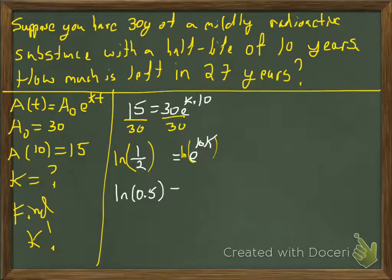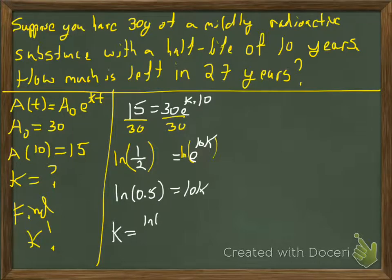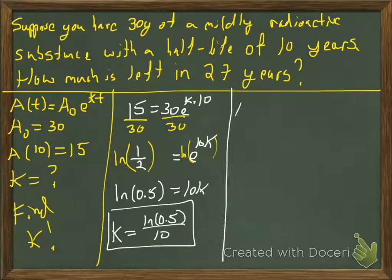Writing 0.5 in decimal form is fine as long as you don't have a repeating decimal — for example, write one-third instead of 0.333 repeating, to stay accurate. Then we divide both sides by 10, giving us k = ln(0.5) / 10. That is our decay constant.